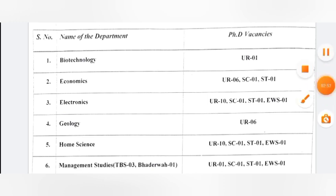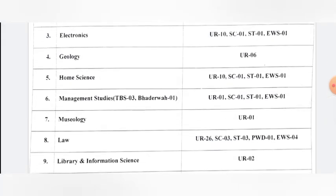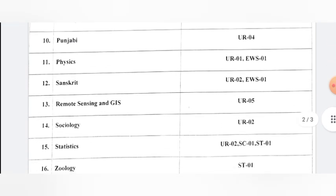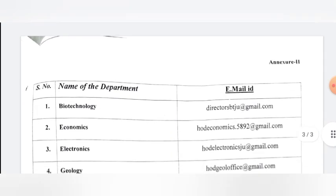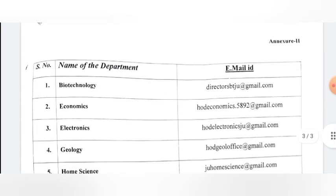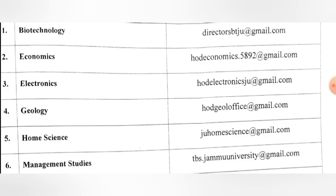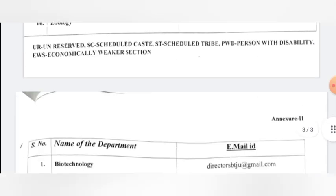The available departments and seats are: Biotechnology 1 (unreserved), Economics total 8, Electronics unreserved 10 with SC/ST and EWS 1 each, Geology 6, Home Science, Management Studies, Museology, Law, Library and Information Science, Punjabi, Physics, Sanskrit, Remote Sensing and GIS, Sociology, Statistics, and Zoology. Overall, 16 departments are available to apply to.